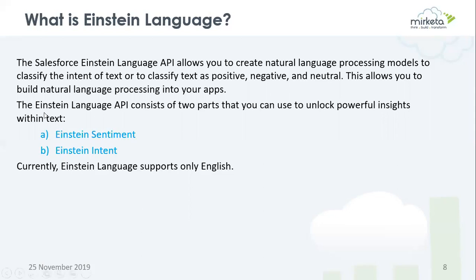Einstein Language consists of two parts that you can use to unlock powerful insights within text. The first one is Einstein Sentiment. Einstein Sentiment classifies the sentiment of text into positive, negative, and neutral classes to understand the feeling behind text. You can use it to analyze emails, social media, or chats to make predictions.